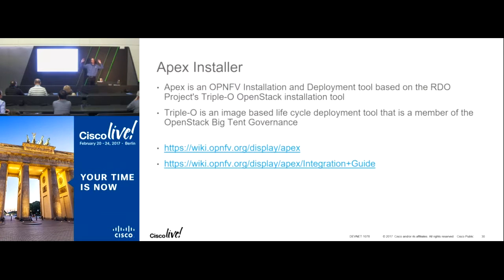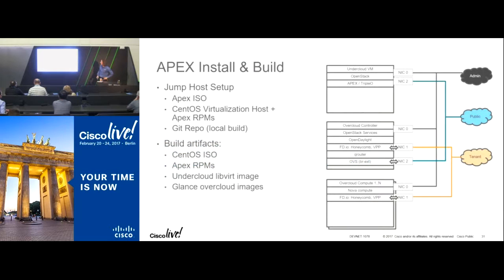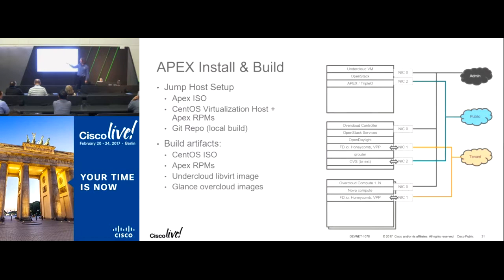The deployment brings up a set of nodes. One is the jump host, which runs the undercloud — a small OpenStack instance used purely to bring up OpenStack on the compute nodes. This undercloud brings up the overcloud, which is your real OpenStack instance. We have one control node and multiple compute nodes. On the control node we run OpenStack services plus OpenDaylight. We run Honeycomb, the data plane management agent. In the L2 scenario we still have the kernel, OVS there. On the compute nodes we run VPP, Honeycomb, and Nova Compute.